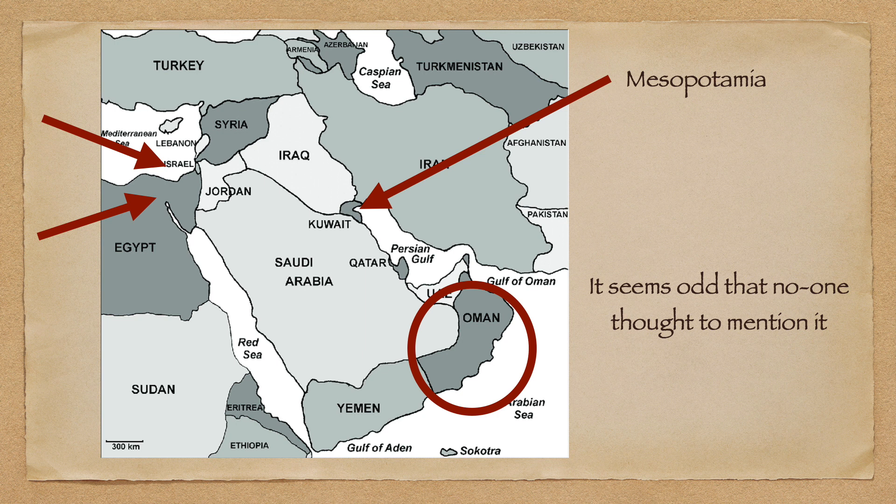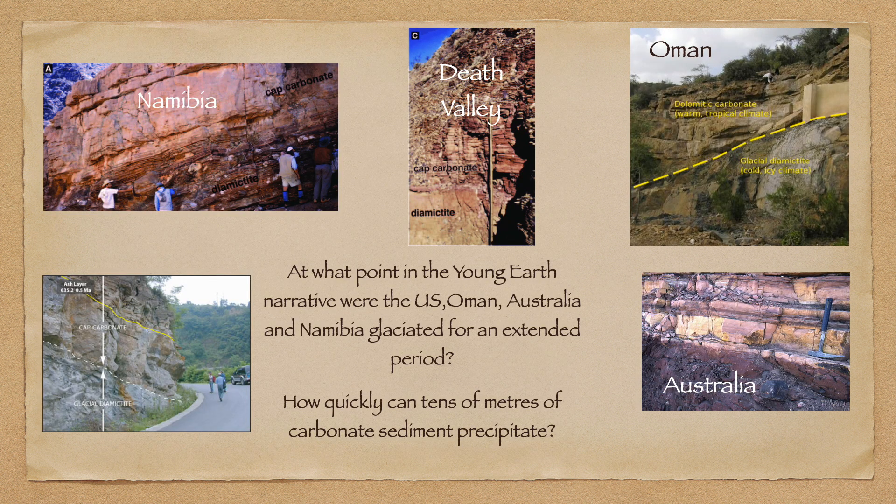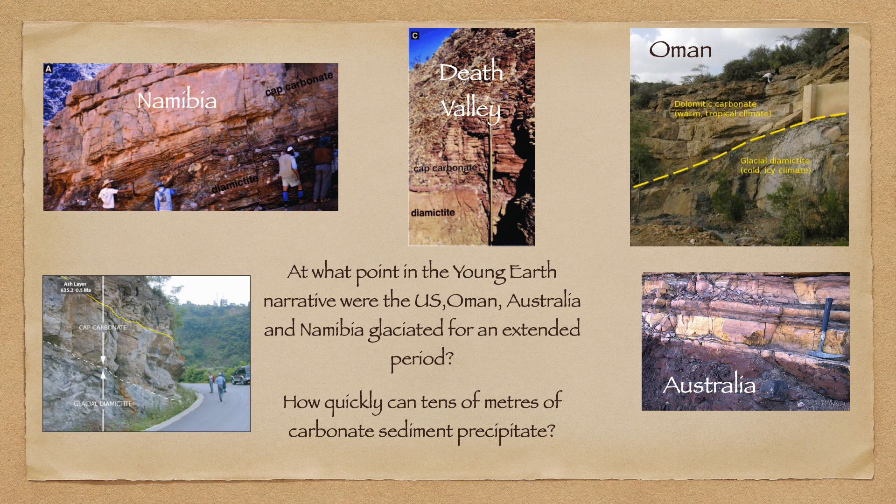It is by no means clear when in the young earth narrative these layers were formed. Doubtless, young earth creationists will come up with some stupid excuse, but it does seem quite strange that none of the civilizations that existed near Oman chose to mention that there was a filthy great ice sheet on their doorstep. Even worse, these inconveniently thick diamictite layers are overlaid by tens of meters of cap carbonates. These cap carbonates were clearly deposited in a marine environment, and here again we run into a process that simply cannot be accelerated.